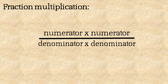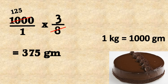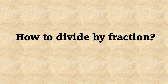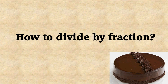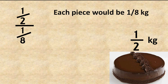During fraction multiplication, we multiply numerator with numerator and denominator with denominator. We can make the product smaller by canceling common factors — here we divided top and bottom by eight to simplify. Now what about fraction division? We take that same cake again, and this time we want to cut equal pieces each weighing one-eighth kg.